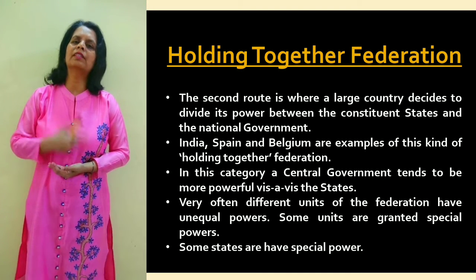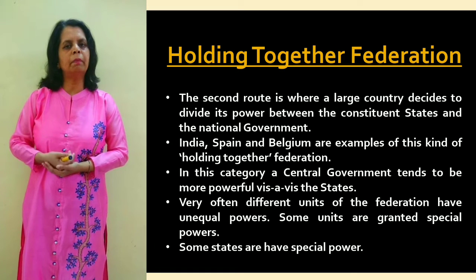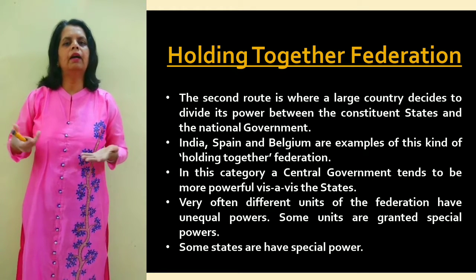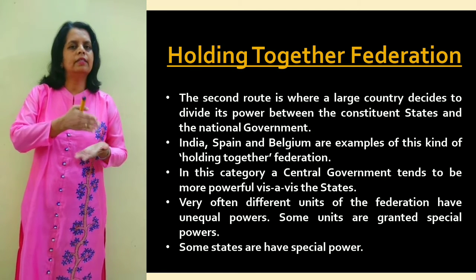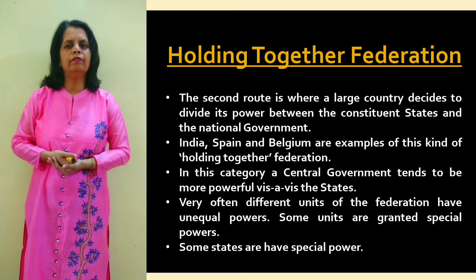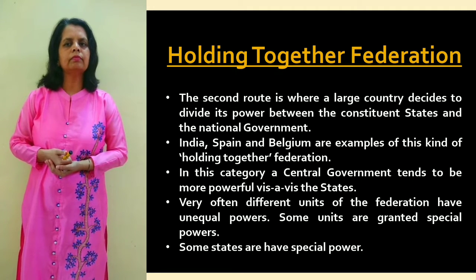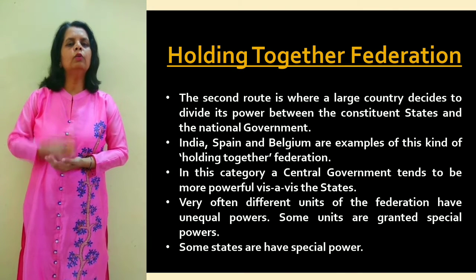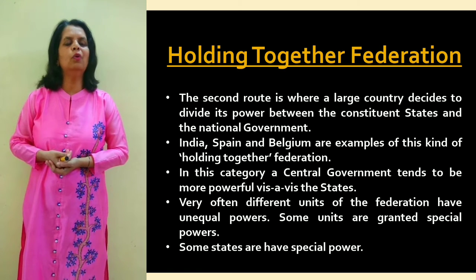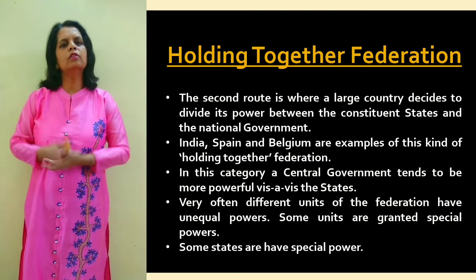Some states have been given special provisions - for example, unequal power like the state of Jammu and Kashmir initially had, and union territories which also have special powers. Such a type of federation, where power is divided among the central, state, and regional government with the central government being more powerful and some units having special powers, is called 'holding together' federation.